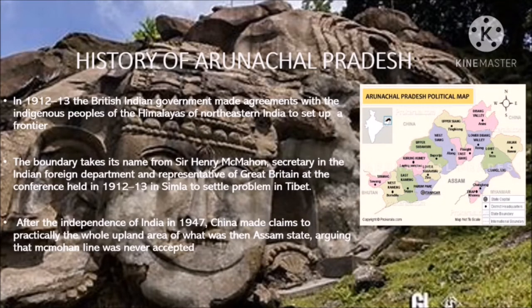History of Arunachal Pradesh: Between 1912 and 1930, the British Indian government made agreements with the indigenous people of the Himalayas of northeastern India to set up the Balipara Frontier Tract in the west, the Sadiya Frontier Tract in the east, and the Abor and Mishmi Hills and the Tirap Frontier Tract in the south. These tracts together became the Northeastern Frontier Agency, which is now Arunachal Pradesh. The boundary takes its name from Sir Henry McMahon, Secretary in the Indian Foreign Department and Representative of Great Britain at the conference held in 1912 to 1913 in Simla in the state of Himachal Pradesh.